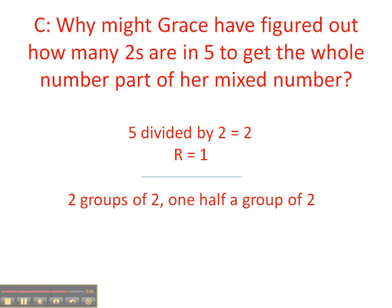And then, that shows us that we have two groups of two. In five there are two groups of two, but there's one half group of two also in that five. That's our remainder. And then finally, if we have two groups of two, that's two. And we have a half group of two, that's a half. So Grace could have figured it out like this. It's two and a half.